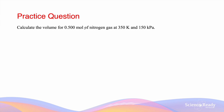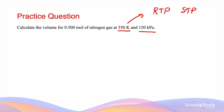Here is an example of how we use the ideal gas law. The question reads: calculate the volume for 0.500 moles of nitrogen gas at 350 K and 150 kPa. For this question we can't use molar volume because these conditions are neither RTP nor STP, so we will need to use the ideal gas law to work out the volume.